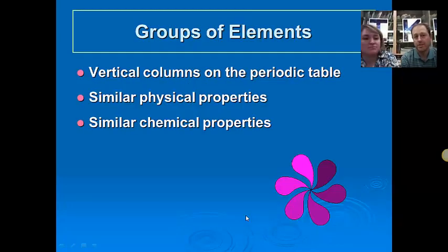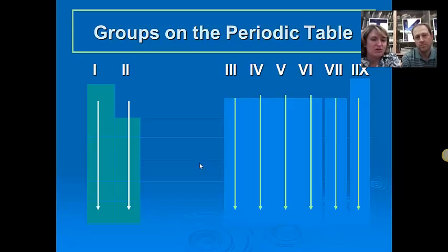So as I mentioned earlier, we have vertical columns, and these are called groups. And all of these that are set up vertically, they have very similar physical and chemical properties. And we're going to talk about the alkali metals, but all of those are soft. You can cut them with a knife, and they're very violent. They have violent reactions with water, all of them in that group.